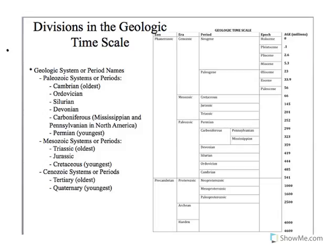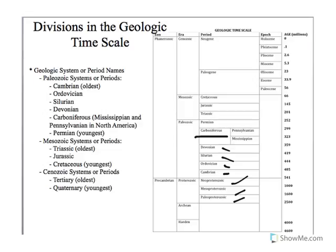Starting back in the Proterozoic, we have three different periods: the Paleo-Proterozoic, which is the oldest; the Meso-Proterozoic, the middle; and the Neo-Proterozoic, the newest. Then jumping into the Paleozoic, we have the Cambrian, Ordovician, Silurian, and Devonian. Then we come to a unique one — when this timescale was originally made in England, they saw one unit called the Carboniferous, which was a giant coal seam. When they came to the United States, they saw that coal seam but noticed a distinct difference between the bottom and the top, which is why we divide it into the Mississippian and Pennsylvanian.